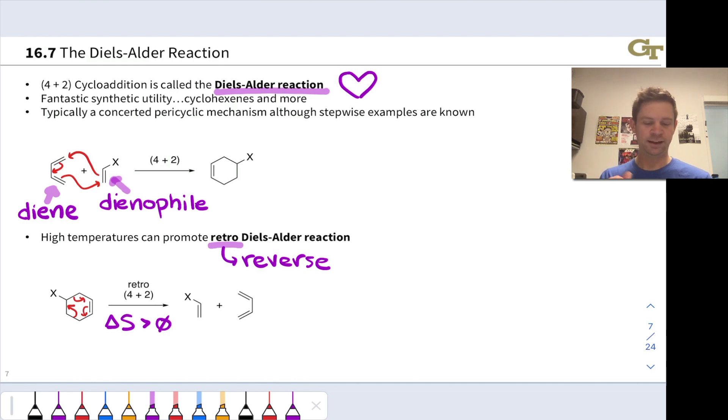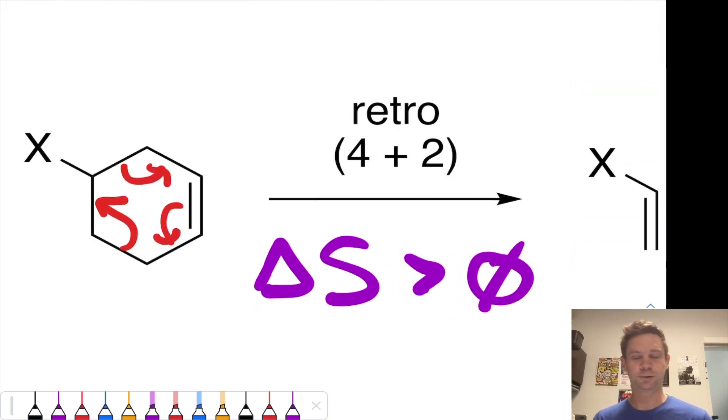Another thing worth mentioning is if you look at the electron flow in this step, you'll notice that it's actually very similar to the electron flow for the Diels-Alder reaction itself. This sigma bond breaks, these pi electrons shift over, and this sigma bond also breaks.